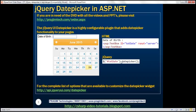And then we need one line of jQuery code. Within the jQuery ready function, find the text box control by ID. Here we are using the jQuery ID selector to find the text box, and on that we're calling the datepicker function. So that's all there is to it.